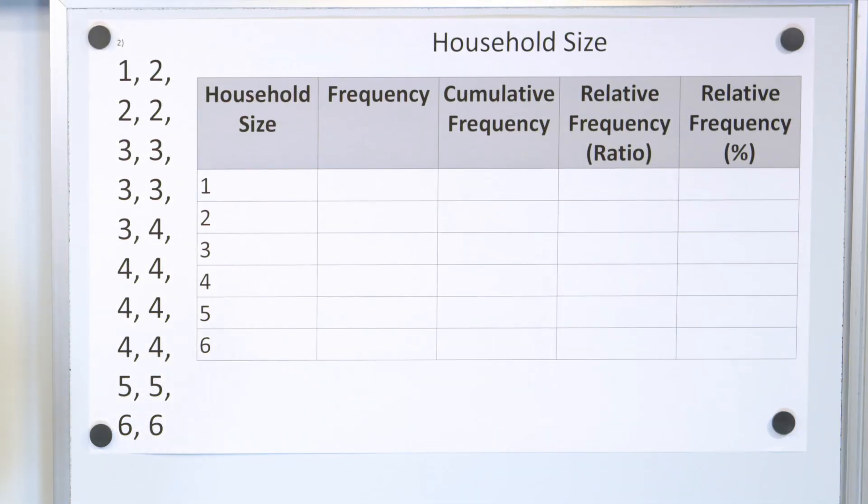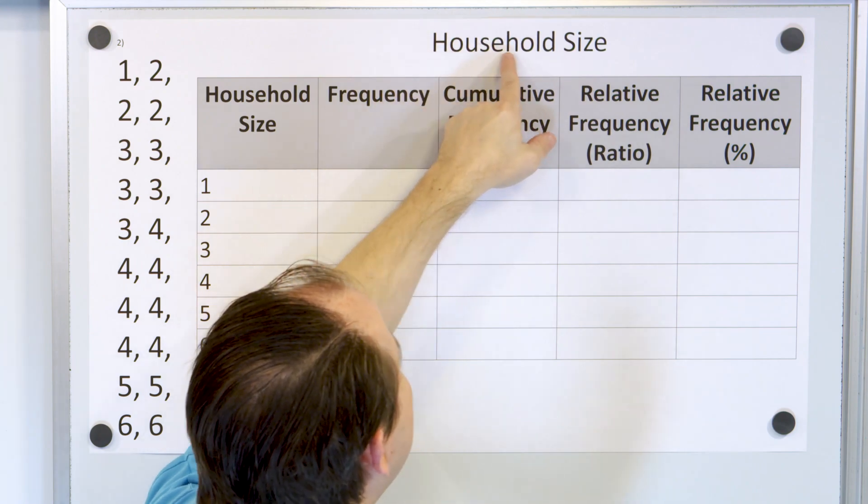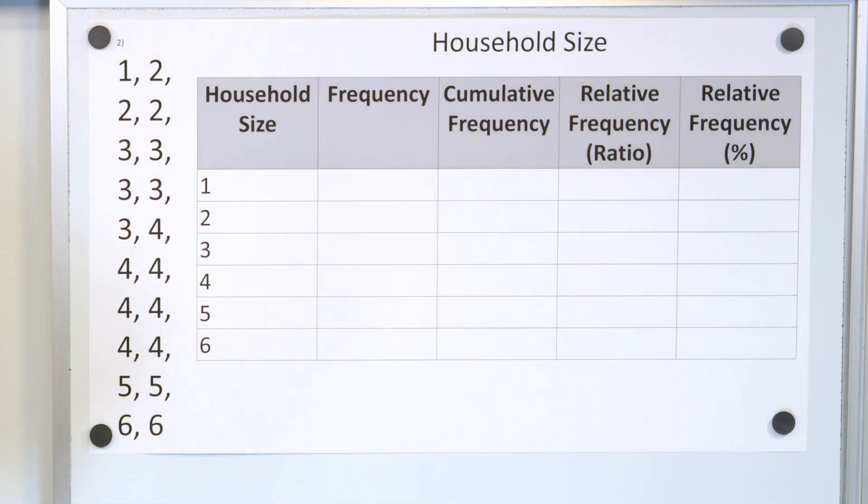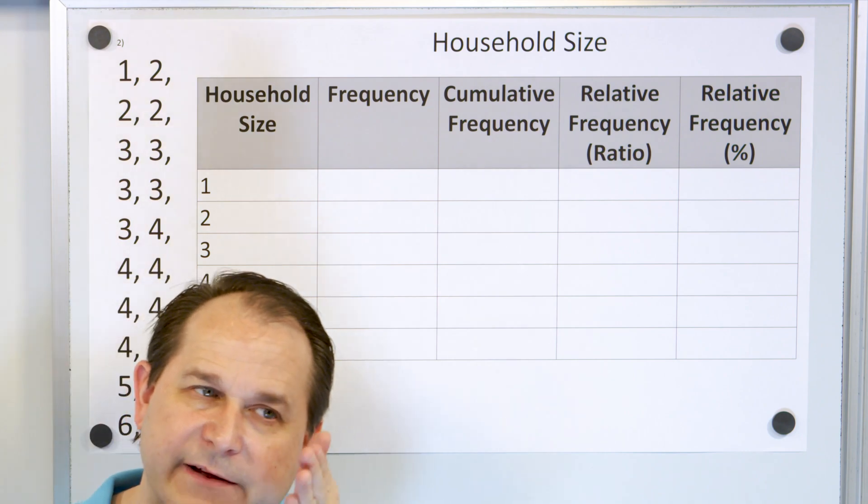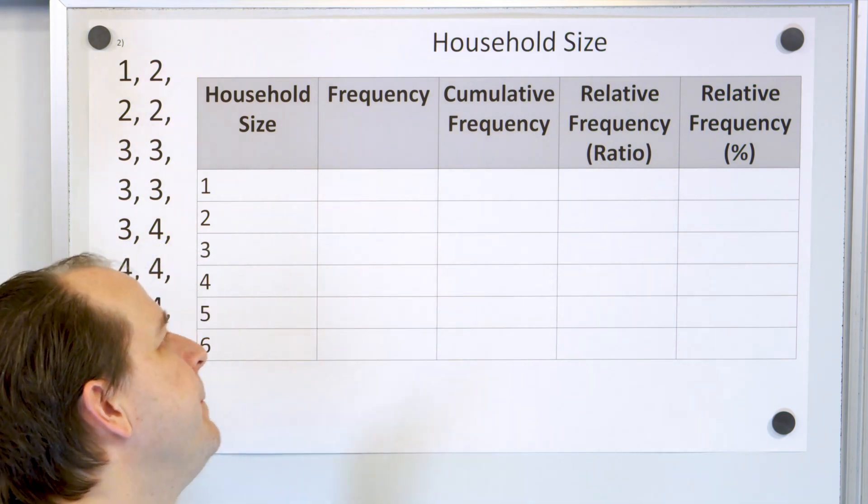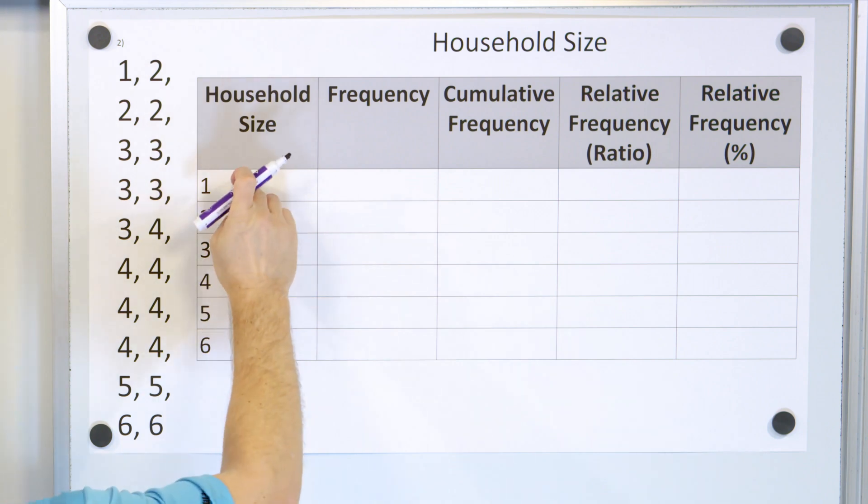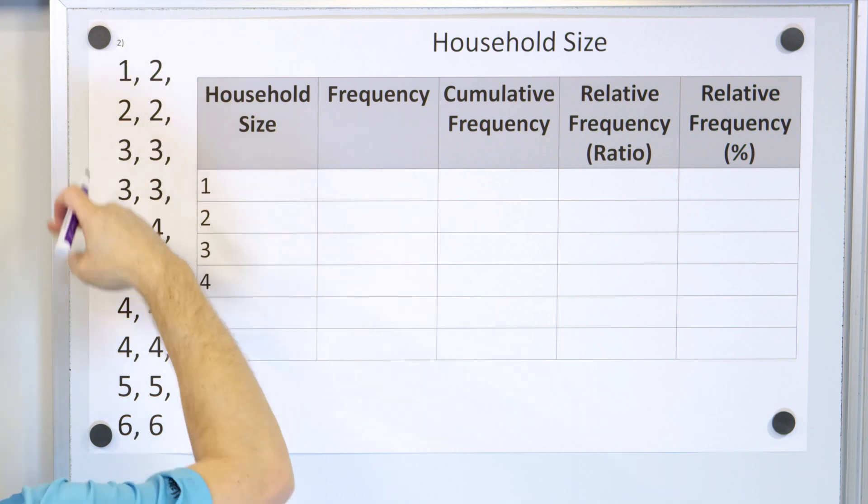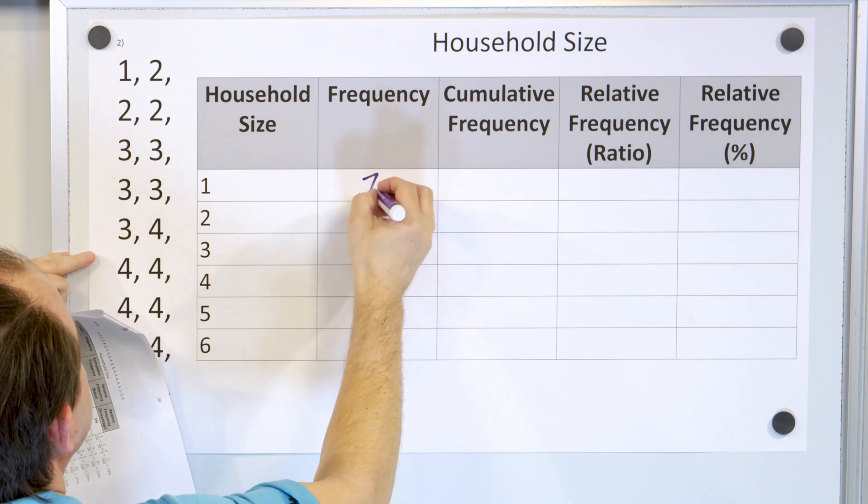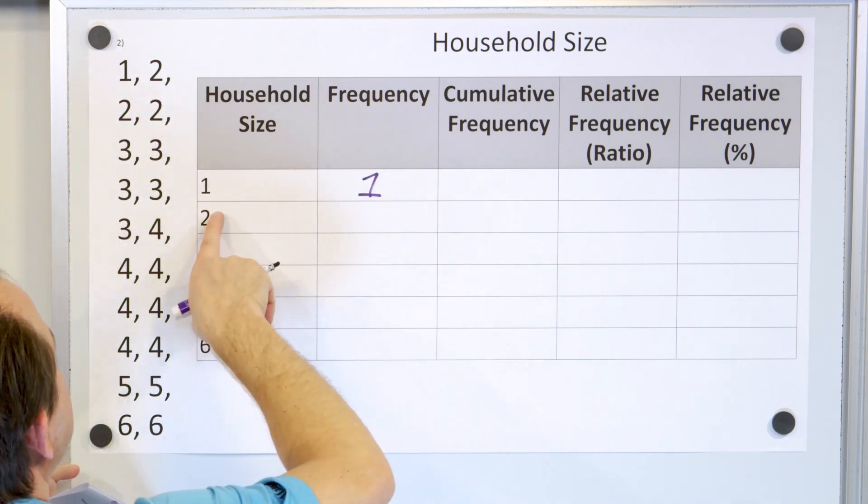All right. Let's take a look at problem number two. Here we're taking a survey of the size of various households, right? So we take a survey of families and this person has one person in the house. And then we have some people with two people in their household and some people with three and some people with four and some people with five. And I've already ordered this data from smallest to biggest. I always recommend you do that first. Now we have different buckets, one through six for the household size. Now we're going to fill in the frequency. How many of our data has only one size of the household? There's only one data point. So only one fits into this bucket.